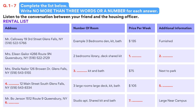Now turn to section one of your booklet. Section one. You and a friend are looking for a place to live. You have a list of places and go to see a rental agent to check on a number of points. Listen to the conversation between your friend and the rental agent and complete the list. First, you have some time to look at questions one to six on the housing list.